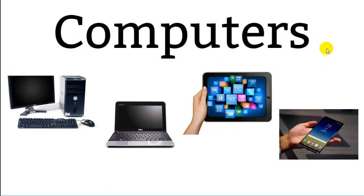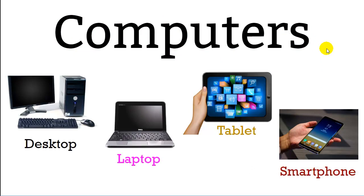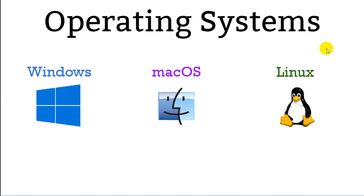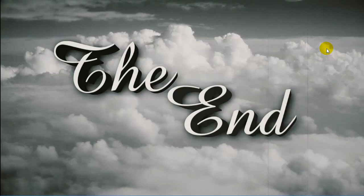So there are four basic kinds of computers: desktops, laptops, tablets, and smartphones. There are three types of operating systems: Windows, Mac OS, and Linux. Windows is for PCs, Mac OS is for Apple products, and Linux runs the Android products. That's about all there is to it.